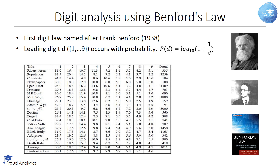Benford analyzed the distribution of the first digits in 20 tables concerning populations, molecular weights, mathematical sequences, and death rates. In total, he observed 20,229 numbers by hand. He found the leading digit d, equals 1 to 9, occurs with a probability of log base 10 of 1 plus 1 divided by d.